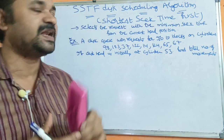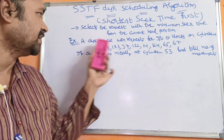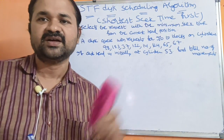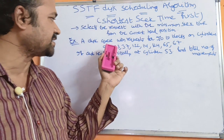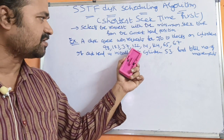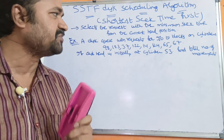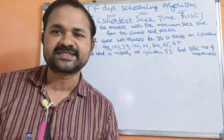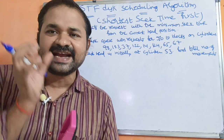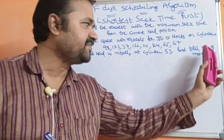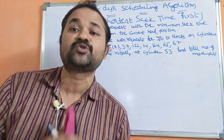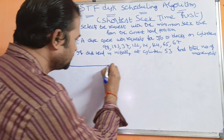Let us see an example using the SSTF disk scheduling algorithm. A disk queue with requests for I/O to blocks on the following cylinders: 98, 183, 37, 122, 14, 124, 65, and 67. These are the cylinder numbers given. The total number of cylinders is 200, so the minimum cylinder is 0 and the maximum is 199.